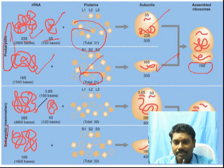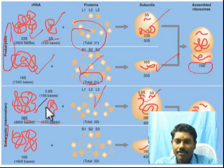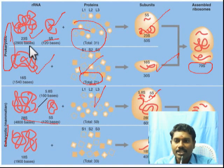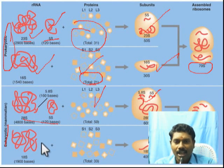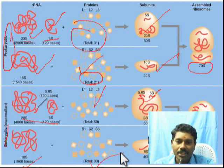In eukaryotic ribosomes, the 60S larger subunit contains 5S, 5.8S, and 28S rRNA, along with about 50 proteins. The 5S rRNA has 120 bases, the 23S rRNA has 2900 bases, and the 28S rRNA has 4800 bases. The 18S rRNA has 1900 bases and the 16S rRNA has 1800 bases.